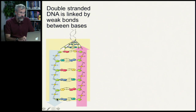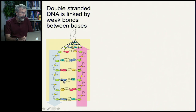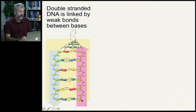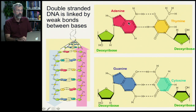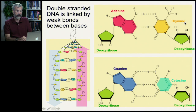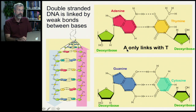Here's a chain of nucleotides with the sugar-phosphate backbone and a sequence of G, T, G, A, C, A, etc. There is a complementary partner on the opposite side — this is a double-stranded molecule. The double-stranded DNA is linked by weak bonds between these complementary bases. Adenine on one strand pairs with thymine on the opposite strand, and guanine pairs with cytosine. So A only links with T, and G only links with C.